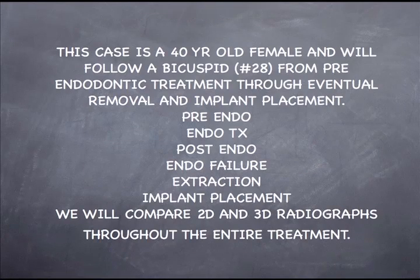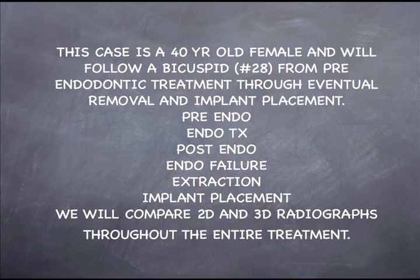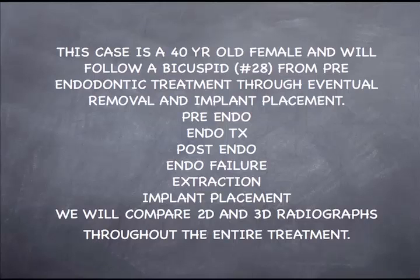The case we're going to talk about today is a 40-year-old female who came in for tooth number 28, lower right bicuspid, and had a varied history from being a normal tooth to having pain. We're going to follow this through the endo treatment, the endo failure, and eventual extraction and implant placement. The whole point of this program is to show you the difference between 2D and 3D radiographs, and you be the judge in terms of how you would diagnose and treatment plan.